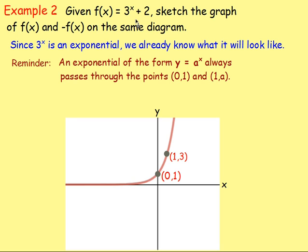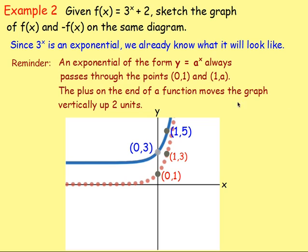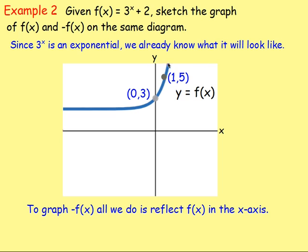Think back to one of the transformations that we've already dealt with in the past. If you've got a plus 2 in the end, what does that do? That's right. It's just going to move the graph vertically up two units. So you're increasing the y value by 2. So instead of being at 0, 1, you move the y value up 2, so it will be at 0, 3. Instead of 1, 3, it will move up to 1, 5. So your graph would look something like that.